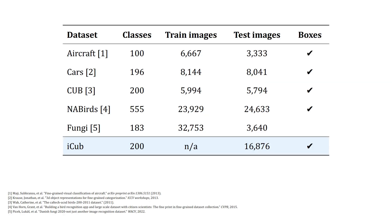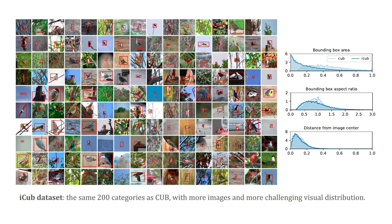We use our difficulty metrics to analyze six FGVC datasets, shown here. We create the iCUB dataset as an additional large source for evaluation. We do not use iCUB for training, but as supplementary evaluation data for models trained on CUB. The iCUB dataset contains 200 bird categories that match CUB. The images are collected from iNaturalist and make up a challenging visual distribution. In particular, there are many more images in iCUB where the target bird is small relative to the area of the image, making correct identification more challenging.